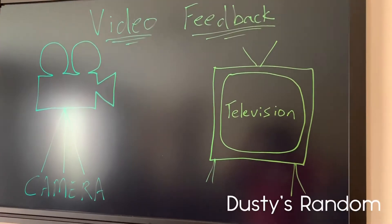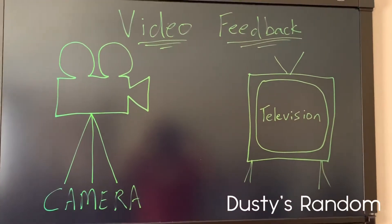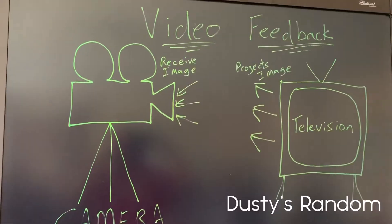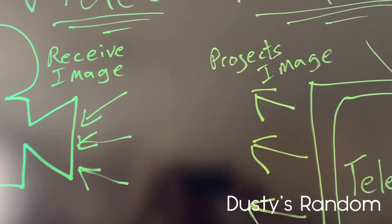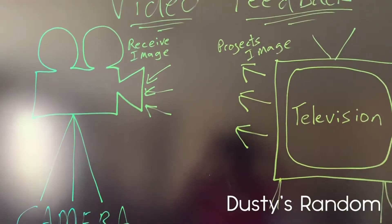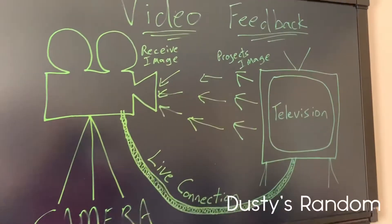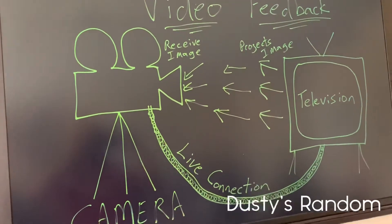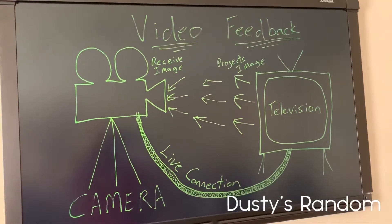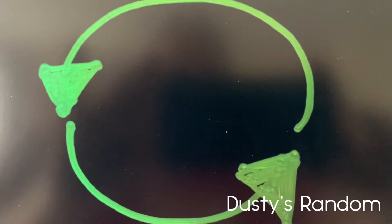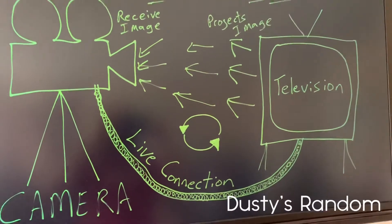For video feedback to happen, we need three things: a camera, a television or a phone, and a live connection. A camera receives images and the TV projects images — just like in audio, we need a connection. With a live connection, you can point a camera at a TV and the camera will receive the same image that the camera is producing. Think of it as a circle — the TV is broadcasting an image and the camera is picking up that image, going round and round.